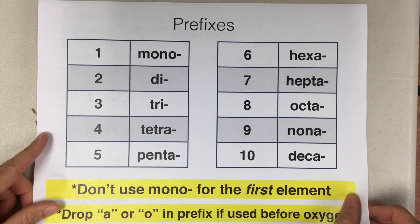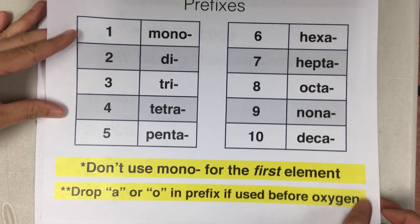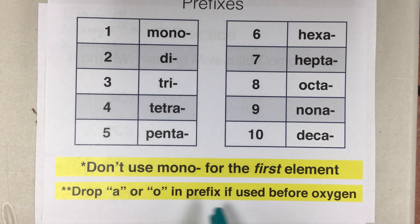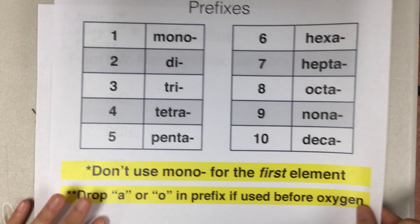You'll have this in your notes. It's a table of the prefixes 1 through 10. And then just two little notes here that we don't use mono for the first element. And then we drop the A or the O in a prefix if it's used before oxygen. So we'll see a couple of examples of that as well.